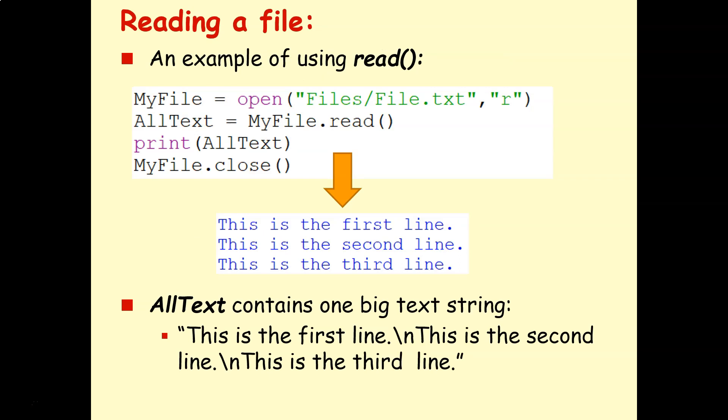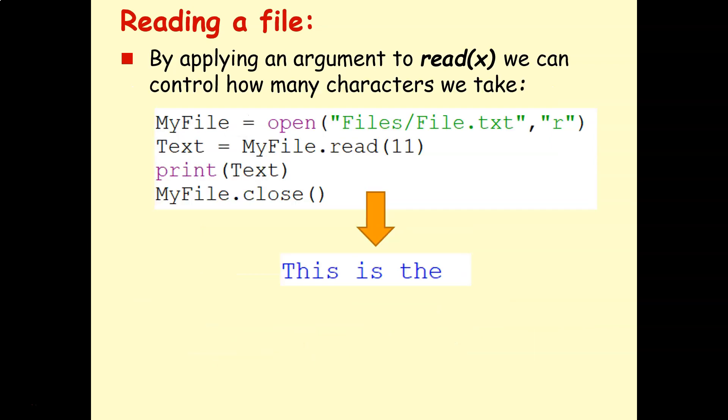Have a look at read. So remember, read takes everything in as a text file and stores it at once as a string. So again, I've got my my file open. And then here I've said my file dot read. So read everything in and then store as a string under all text. And then when I print all text, it just prints everything out. So it's just one big text string. All the new line characters are there stored as all text.